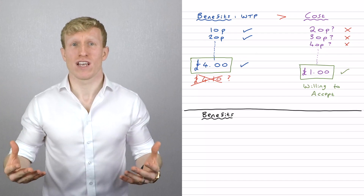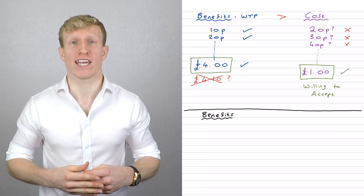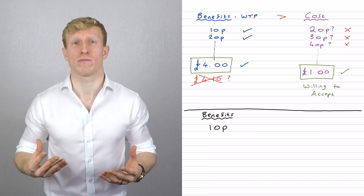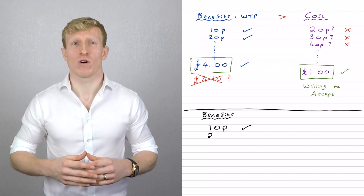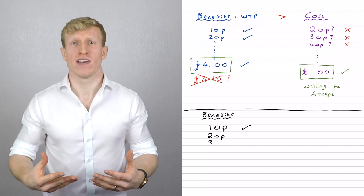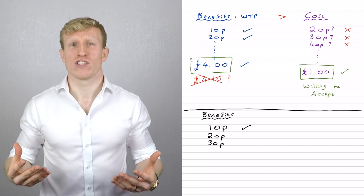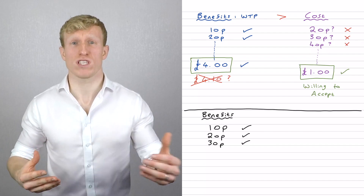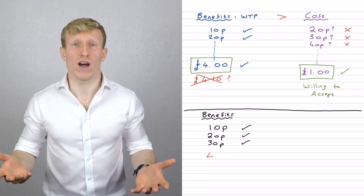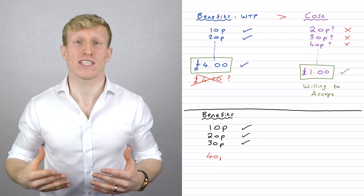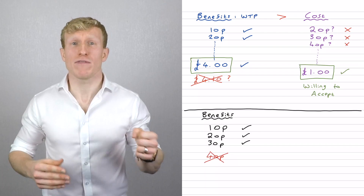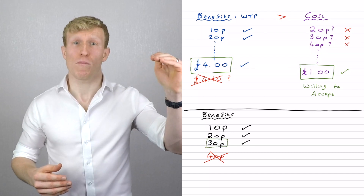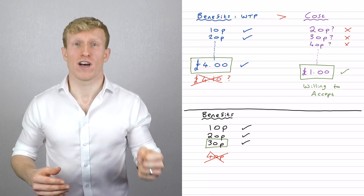Let's do our willingness-to-pay auction again with five minutes left. If they say, "Are you willing to pay 10 pence?" you might say yes. 20 pence? 30 pence? And you get to 30 pence and you think, do you know what, there's only two minutes left — I'd only be willing to pay 30 pence. If you go to 40 pence, it's just not worth it to me because there's only two minutes left of the film. So the benefit of having the volume turned up when there's only five minutes left has dropped from £4 all the way down to 30 pence.